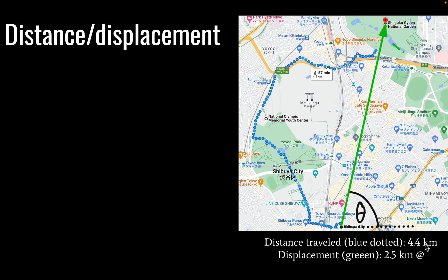The distance traveled in this example is 4.4 kilometers. But my displacement is represented by this green line, and it is a straight line. You might call this as the bird flies. And my displacement here is much smaller, only 2.5 kilometers at this angle.